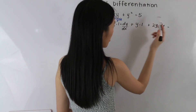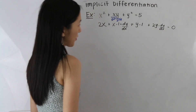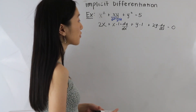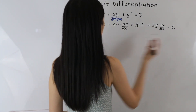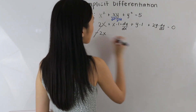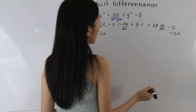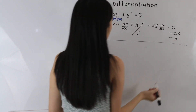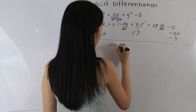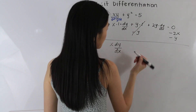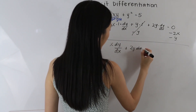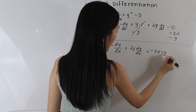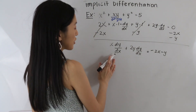The derivative of a constant term is just equal to 0, so we have 0 on the right hand side. From here, let's move all of our terms that do not contain dy over dx onto the other side — that is the 2x term and the y term. We are left with x dy over dx plus 2y dy over dx is equal to negative 2x minus y. On the left hand side, let's factor out a dy over dx.